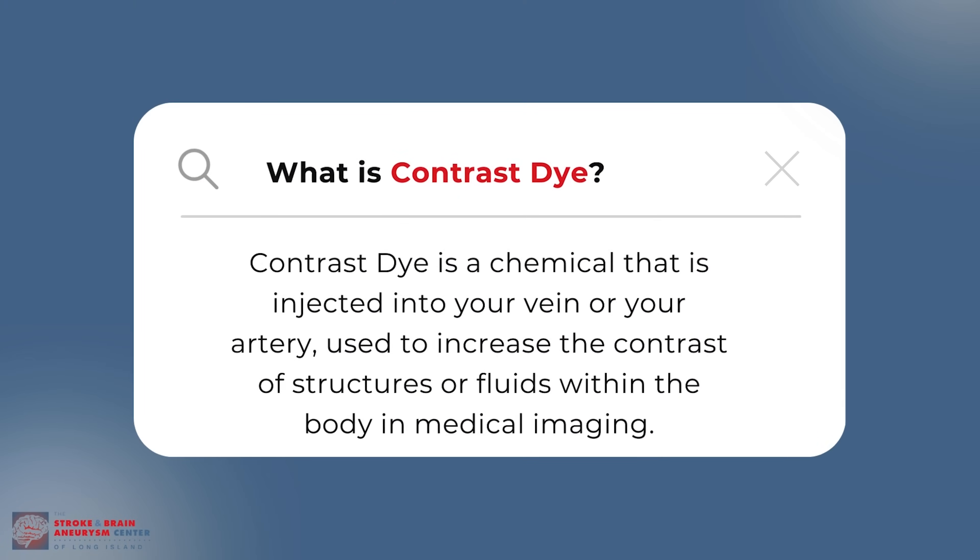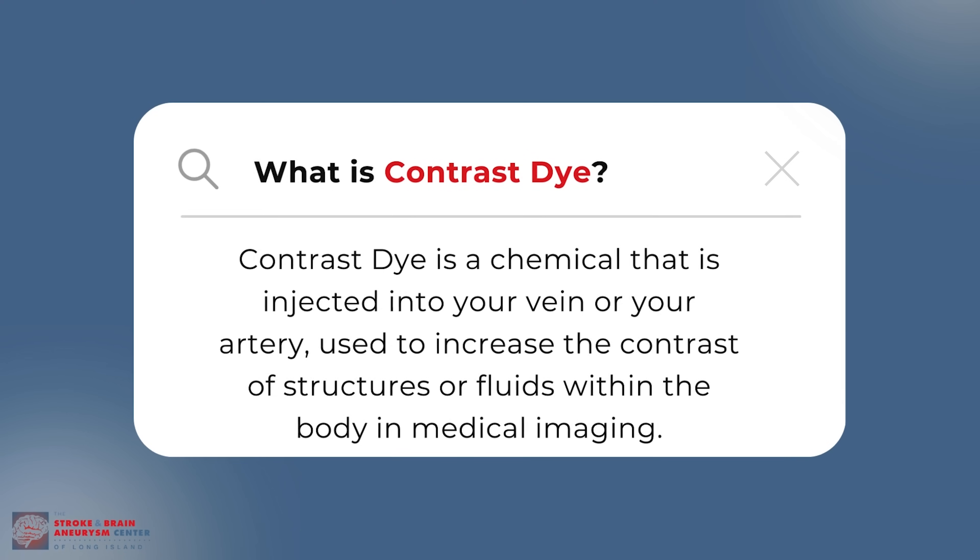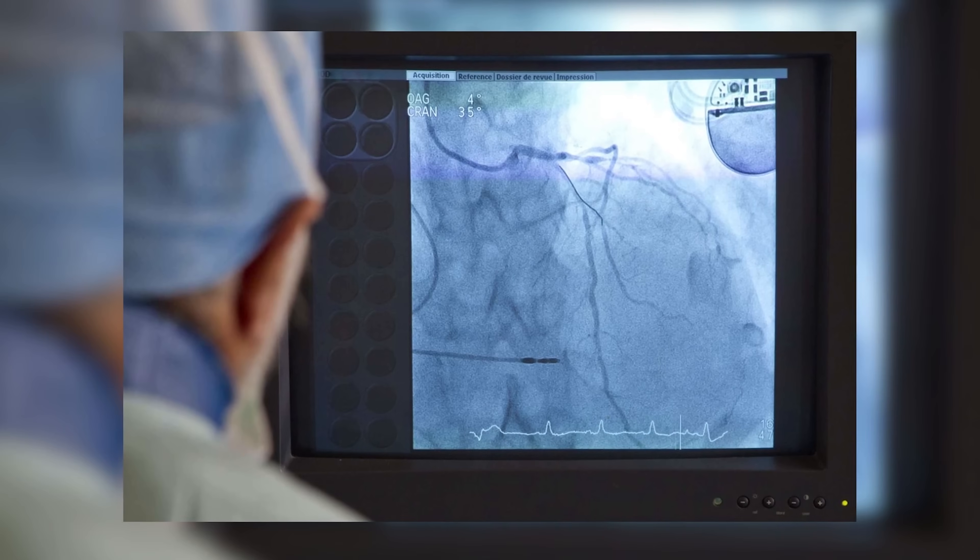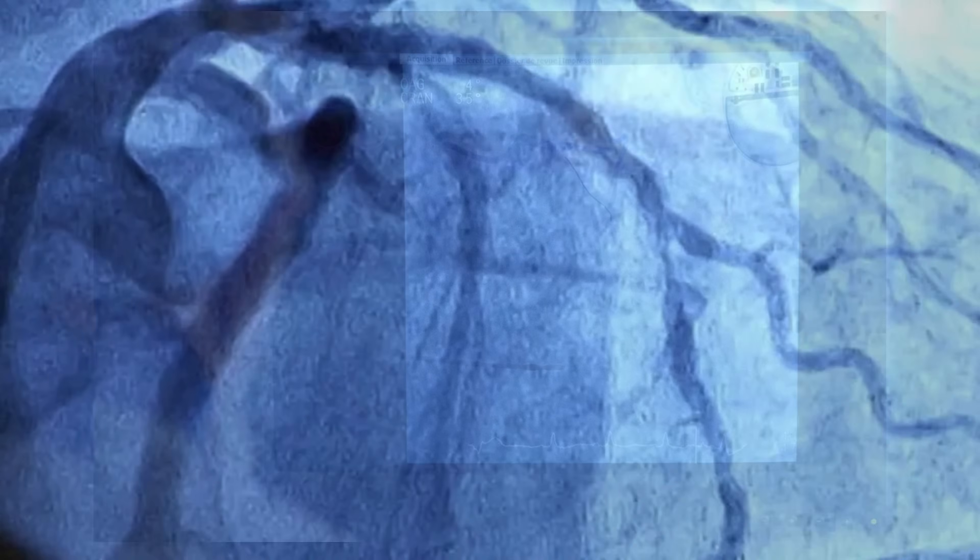When we do studies to look into the brain, we use contrast dye. Contrast dye is a chemical injected into your vein or artery, depending on the type of study. Using X-ray, we can detect it because it's radiopaque — meaning it shows up when we perform radiation. That allows us to see blood flow inside the brain through the arteries or veins, giving us invaluable information to detect blockages or aneurysms.